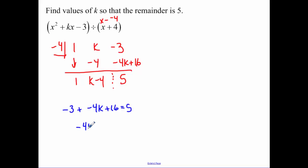We know negative 3 plus the negative 4k plus 16 has to equal 5. So negative 4k has to equal negative 8. K, therefore, has to equal a positive 2.